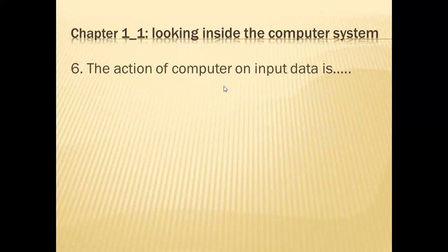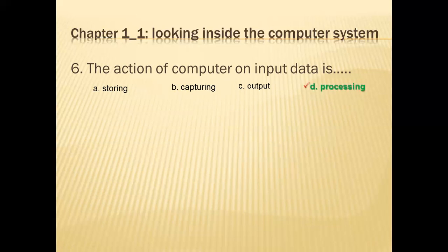The action of the computer on input data is called what? When data is input, the action of the computer starts - that procedure is called processing. The options include storing, capturing, and output, but the answer is called processing.